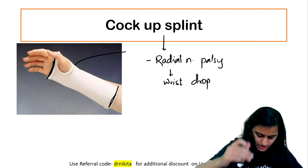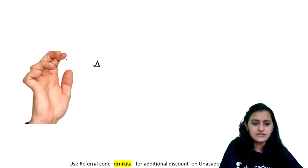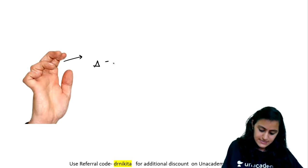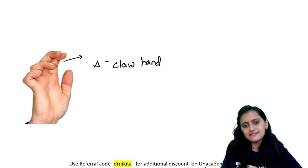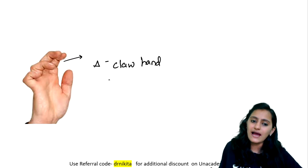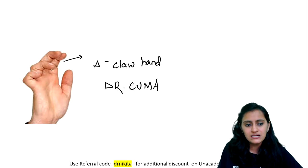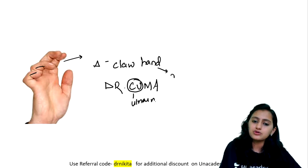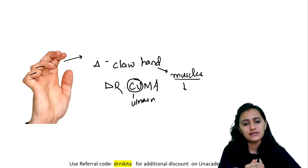Knuckle bender we will see next. What is the diagnosis here? This is claw hand. What causes claw hand? From the mnemonic Dr. Kuma, if I have to choose one, claw hand is seen in ulnar nerve palsy. So why do you see claw hand? It is the lumbricals which are paralyzed — the lumbricals are not functioning well, that is why you get the claw hand.